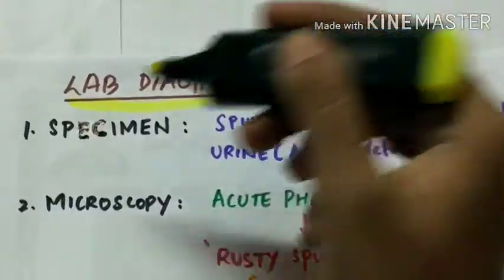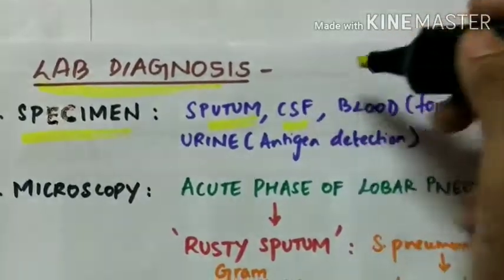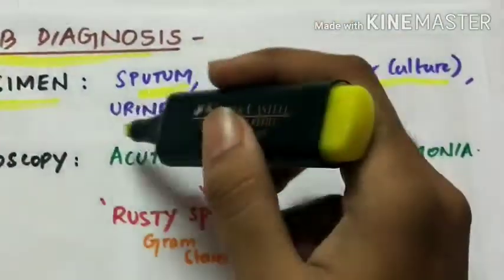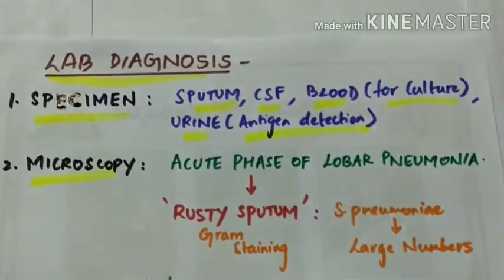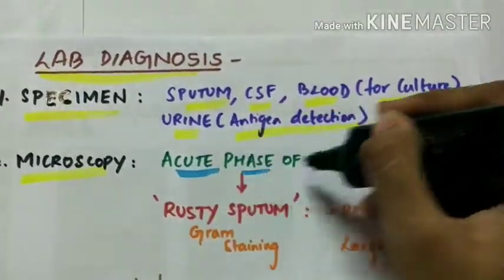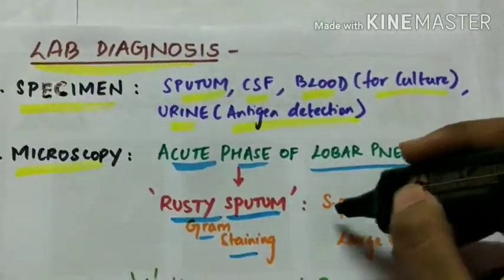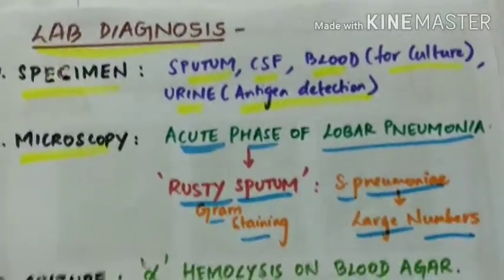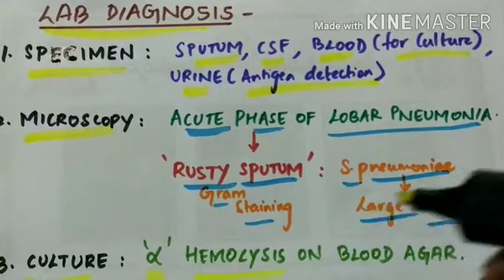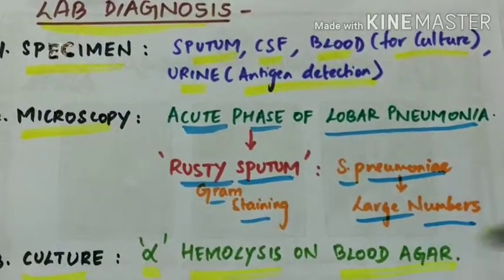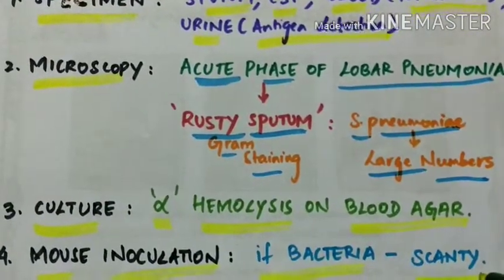Lab diagnosis. The specimens collected include sputum, cerebrospinal fluid, blood for culture, and urine for antigen detection. Microscopy. In acute phase of lobar pneumoniae, the rusty sputum is gram stained which shows Streptococcus pneumoniae in large numbers. Culture. Alpha hemolysis is seen on the blood agar. Mouse inoculation. This is done if bacteria are scanty, that is very few.